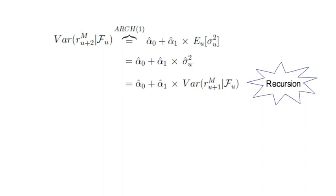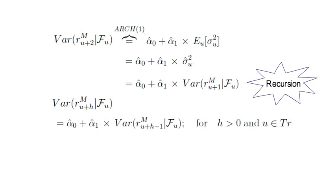Namely, we can state that the variance of R^M_(U+h) conditional on F_U is simply α̂₀ + α̂₁ times the conditional variance of R^M_(U+h-1). For h being the last data point in our training set.